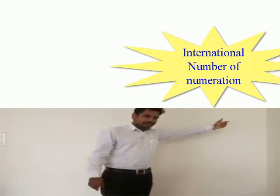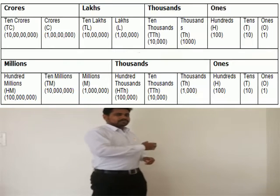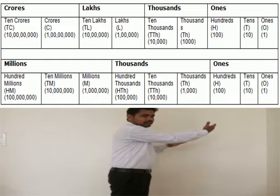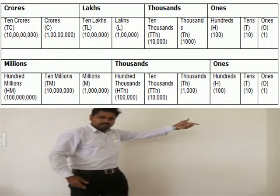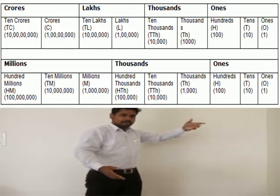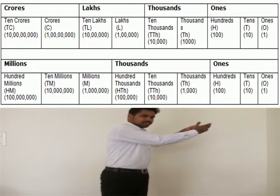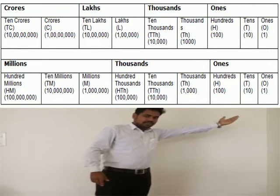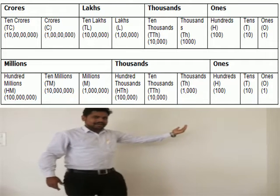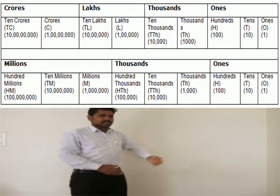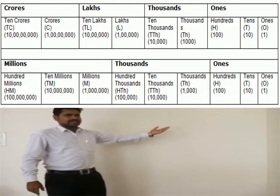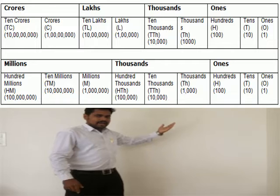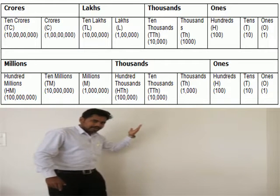If we are talking about the Indian number system, you can see — starting from the right side — we already learned about place and period. In the first period, we have ones, tens, and hundreds. After that, we have thousands, then ten thousands, then lakhs, ten lakhs, crores, and ten crores. This is the series of Indian place value.